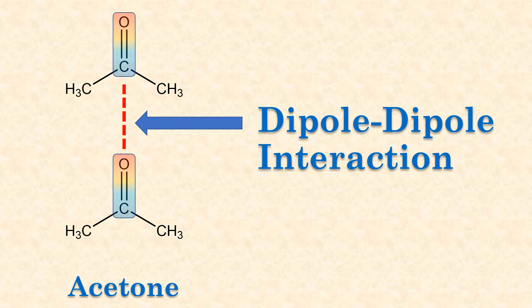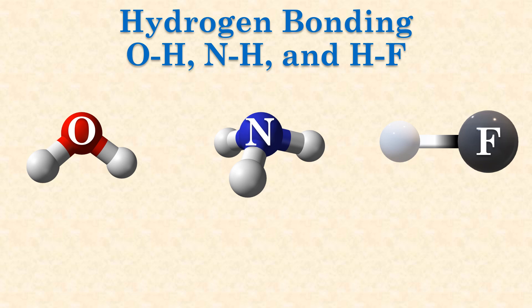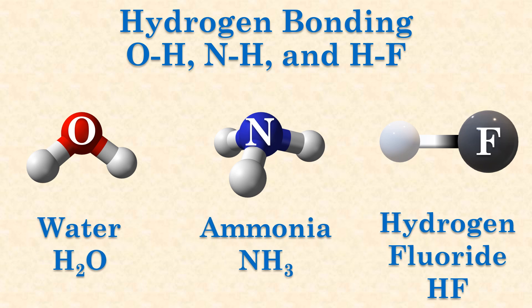Now, let's consider a different special type of dipole interaction. Hydrogen bonding occurs when a hydrogen atom is bonded to a highly electronegative atom, like oxygen, nitrogen, or fluorine. Water, ammonia, and hydrogen fluoride are classic examples.